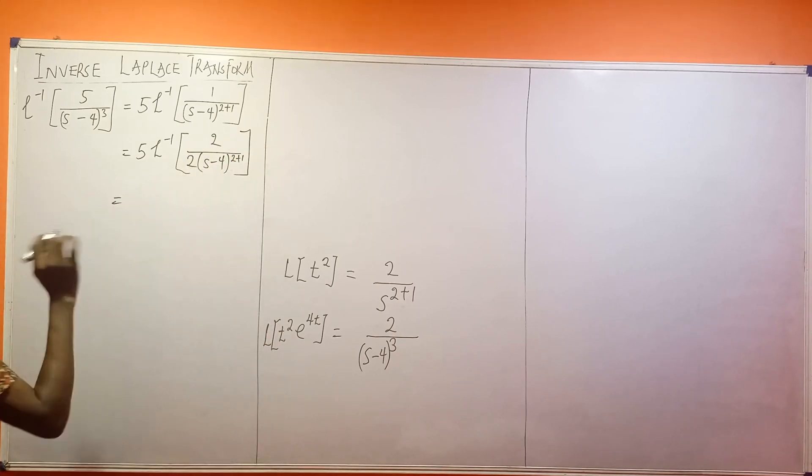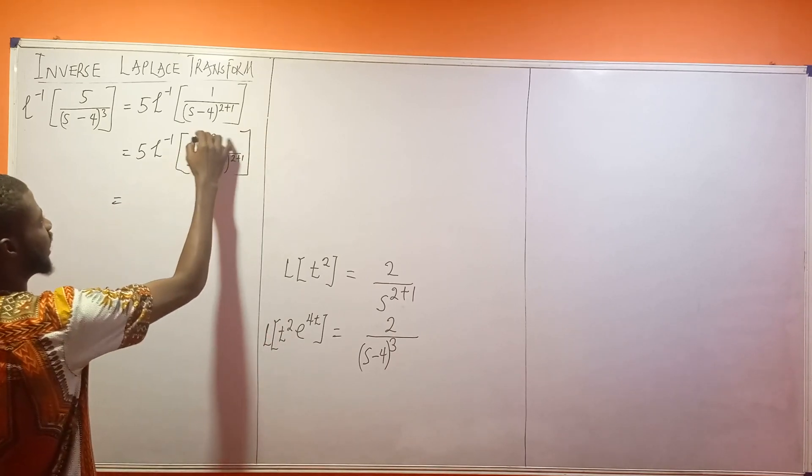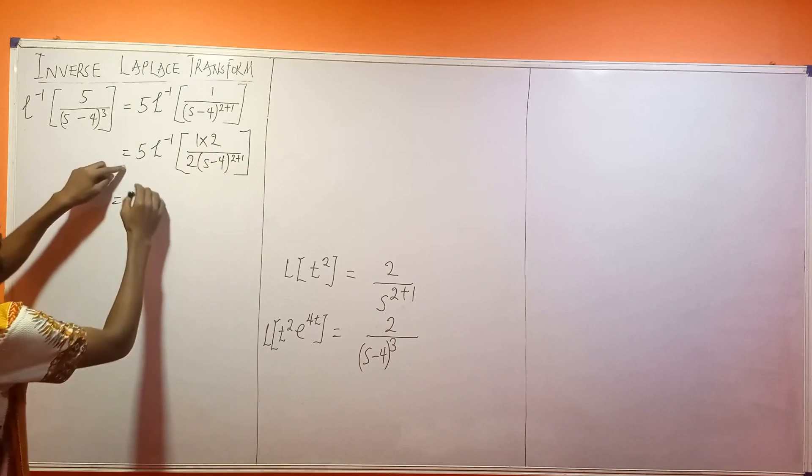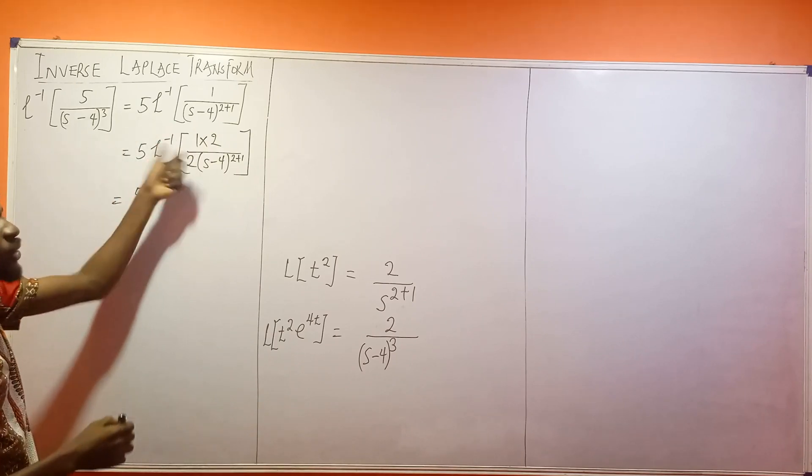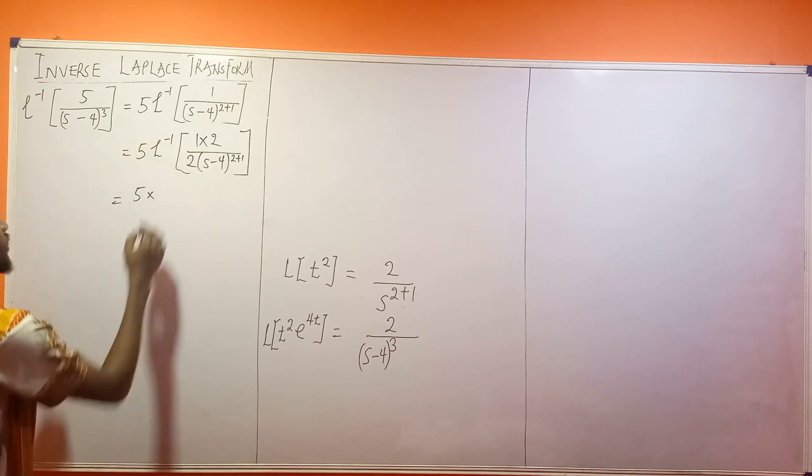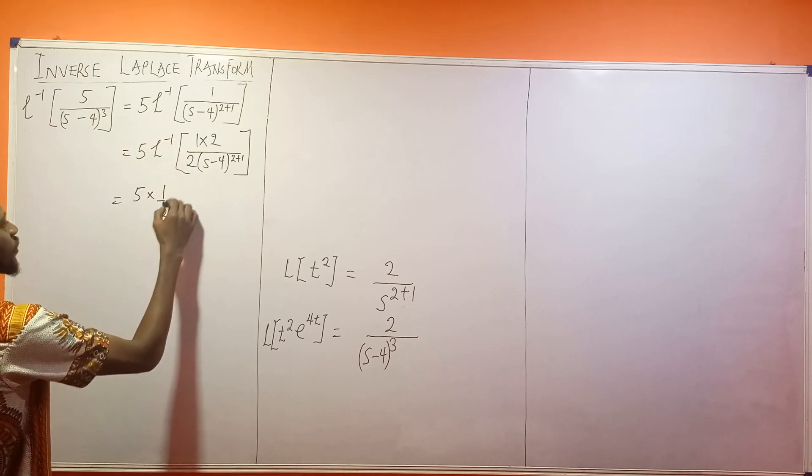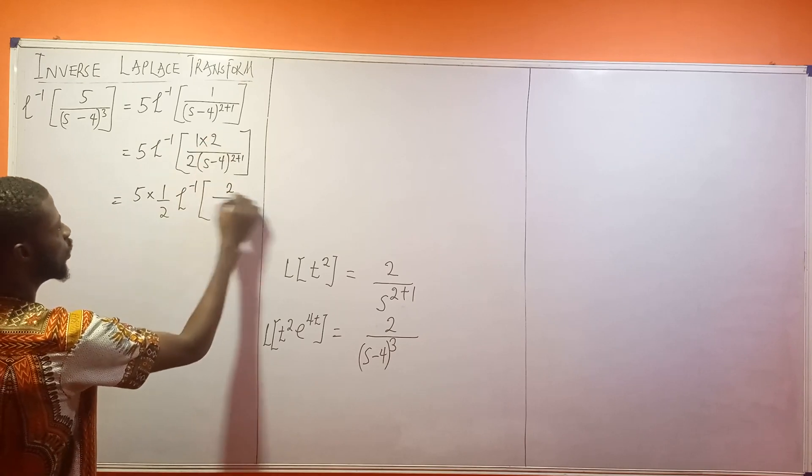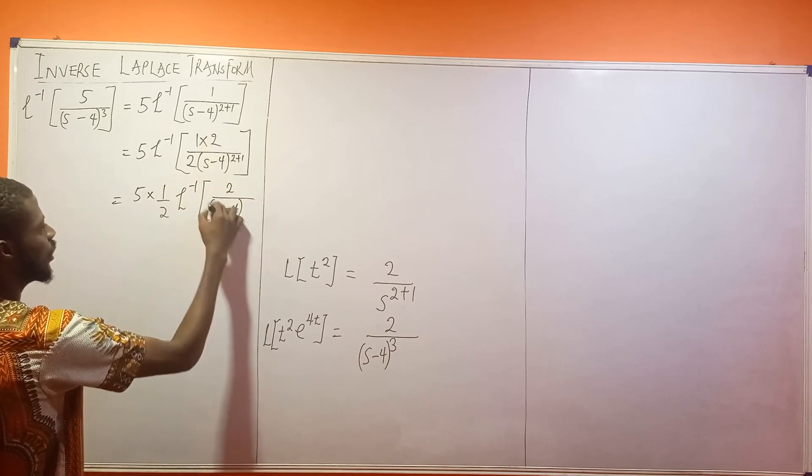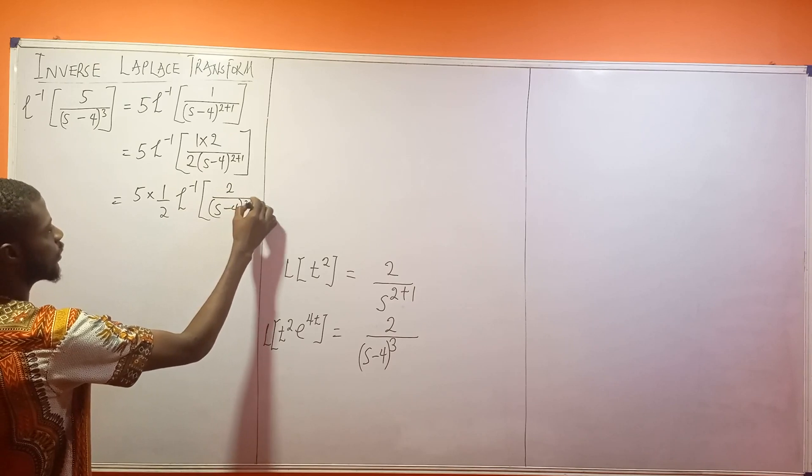Then divided by (S minus 4) to the power of 2 plus 1. So right about now, remember that this can be written as 1 times 2. So this is 5 times... 1 over 2 is a constant, so it can come outside. So this is times 1/2, inverse Laplace of what will be left here: 2 over (S minus 4) to the power of 2 plus 1.